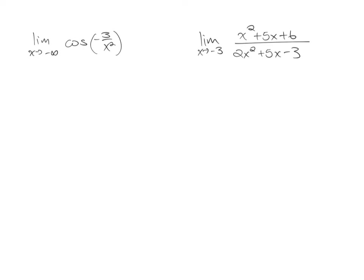In these last two examples, I've got the limit as x approaches negative infinity of cosine of negative 3 over x squared. Even though negative 3 over x squared is inside the cosine, as x goes to negative infinity, this still follows the rule that it goes to 0. So this limit turns into the cosine of 0, which is 1. Easy enough.